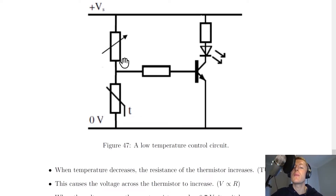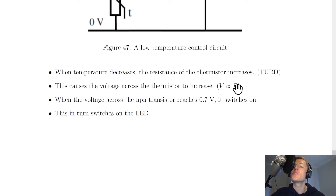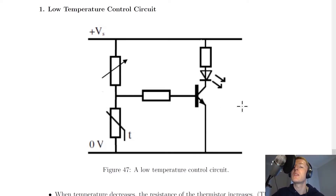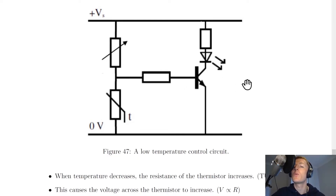Because the resistance of the thermistor increases, the voltage across the thermistor must increase as well. This is because V is proportional to R from Ohm's law — whatever happens to the resistance happens to the voltage. The voltage across the lower component equals the voltage across the transistor, so the voltage across the transistor is also increasing. When this NPN transistor switches on at its switch-on voltage of roughly 0.7 volts, it will in turn switch on the LED and produce light.